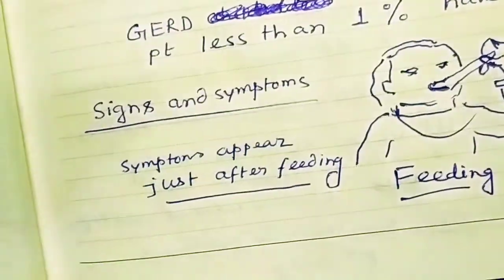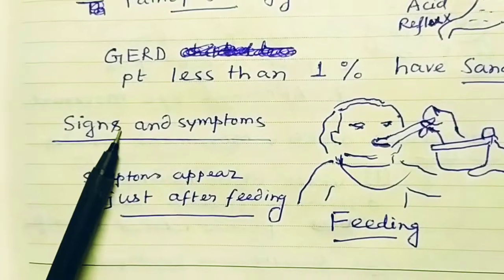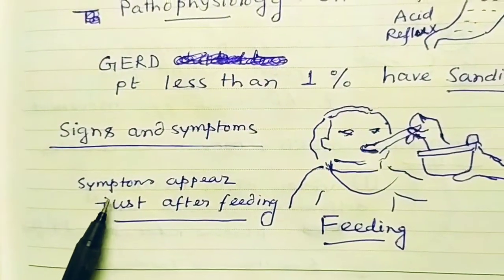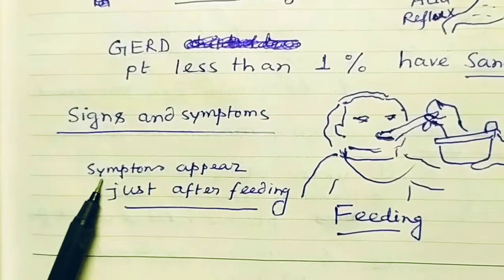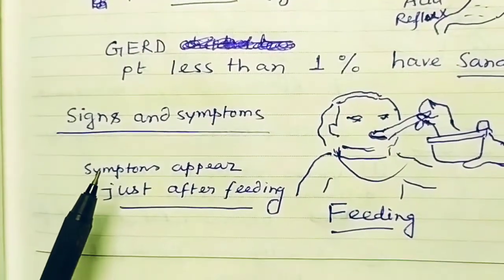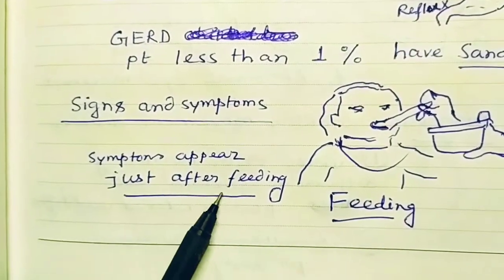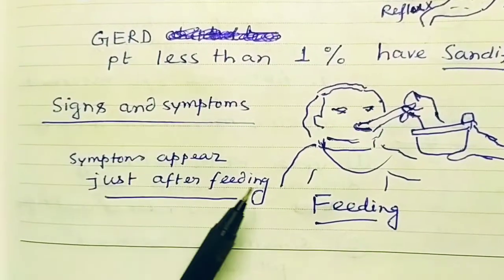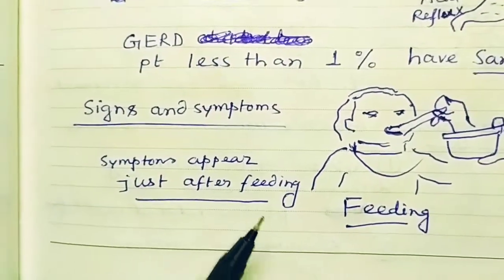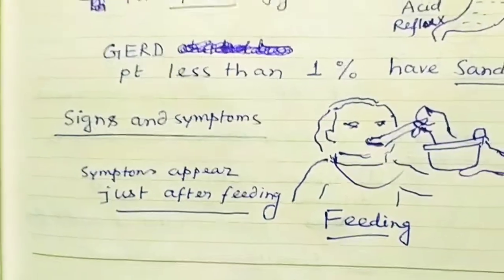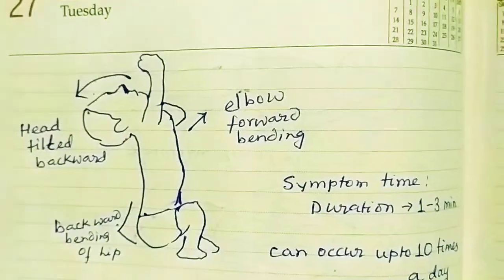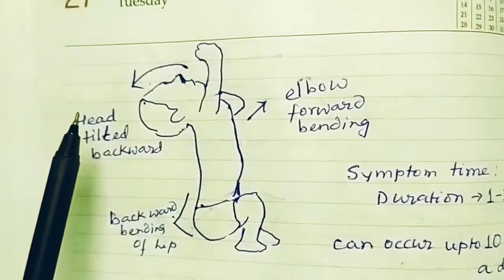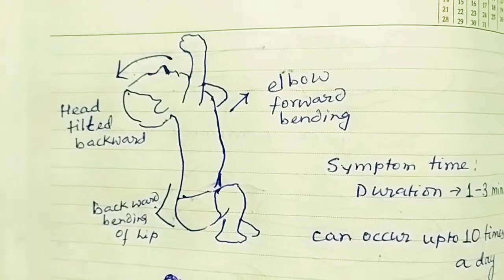Looking at signs and symptoms: the baby is fed, and after feeding, various GERD symptoms appear. Symptoms appear just after feeding — this is very important. If a case is presented where a baby is fed and then symptoms of seizures and GERD appear, this indicates a case of Sandifer Syndrome. The head is tilted backward in the characteristic posture.